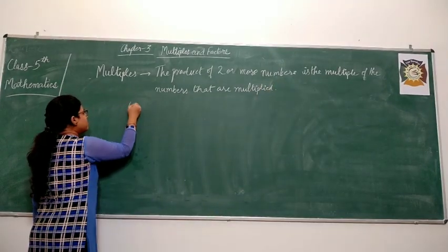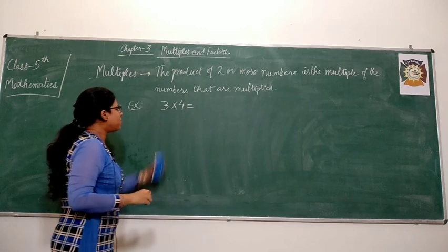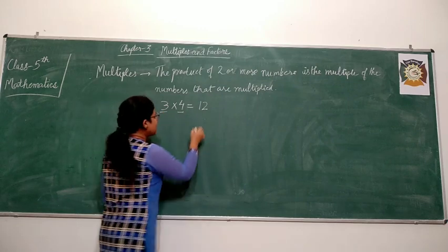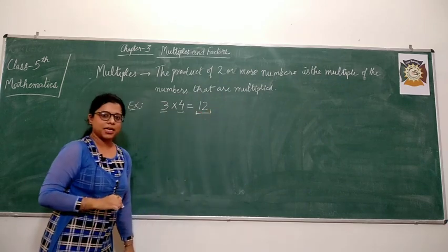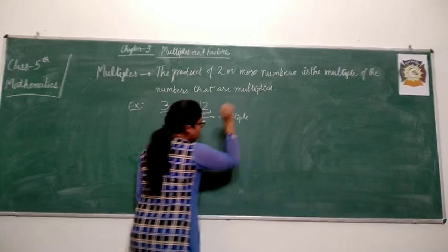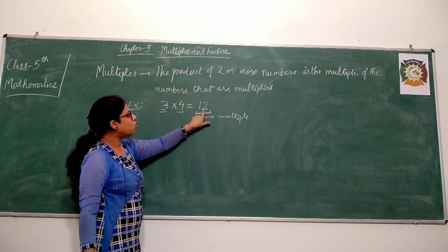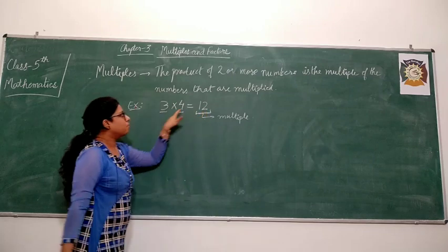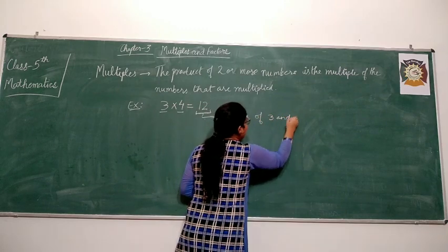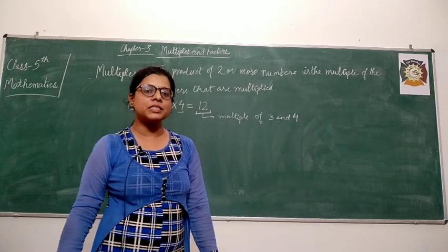Let me explain with the help of an example. Let me take 2 numbers, 3 and 4, and multiply them. After multiplication you will get 12 — 3 fours are 12. So here these 2 numbers are multiplied and the result of the multiplication is 12, and this number is your multiple. Now read the definition again: the product of two or more numbers is the multiple of the numbers that are multiplied.